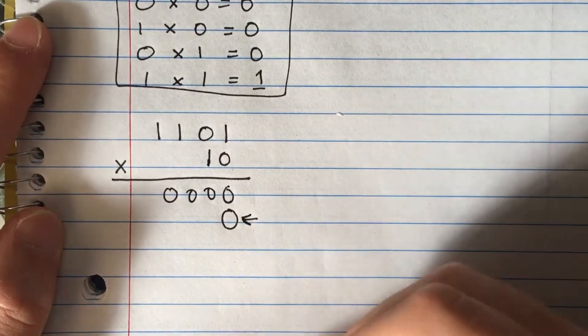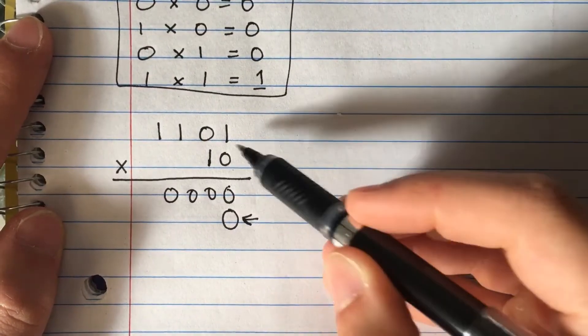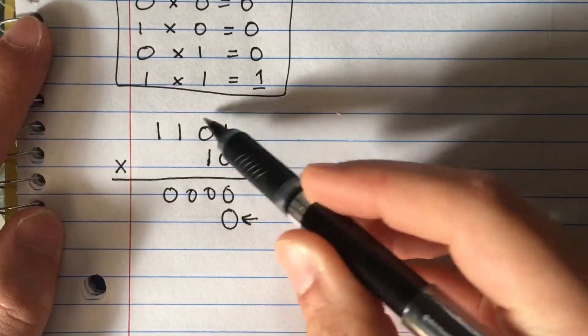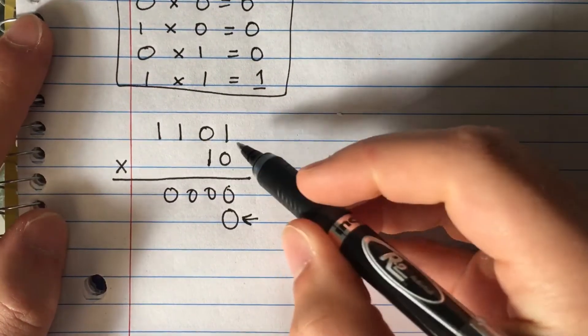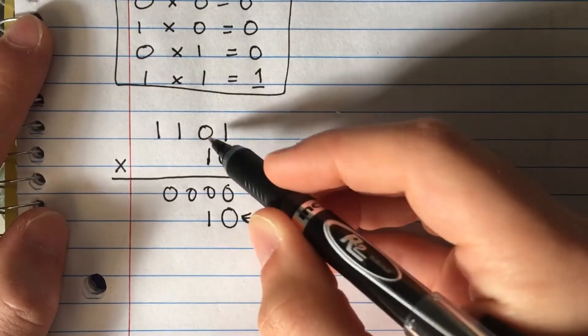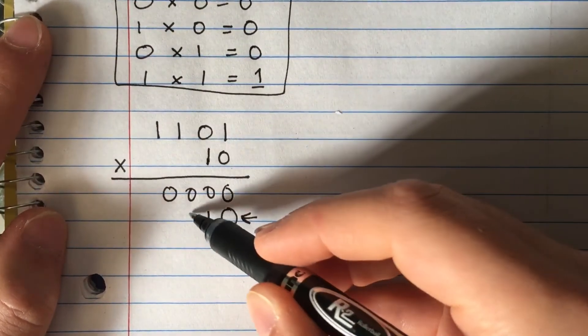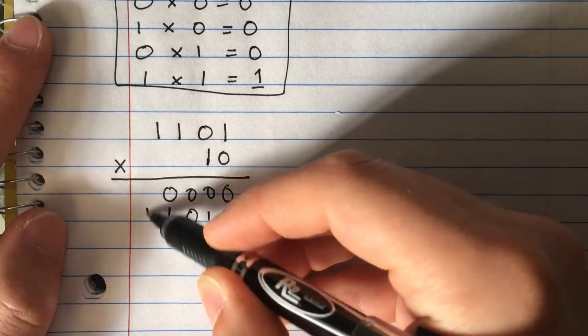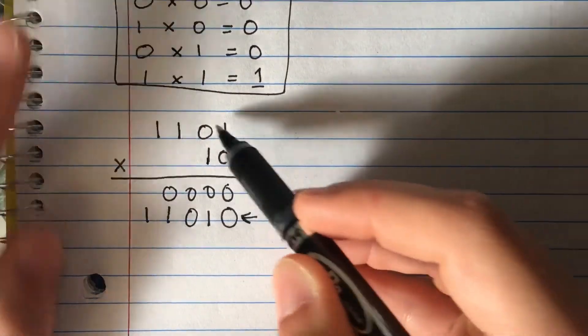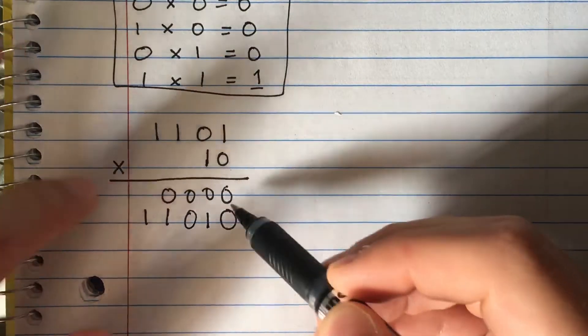Now we're going to multiply the second column in the bottom row. We have 1 times 1 equals 1, 0 times 1 equals 0, 1 times 1 equals 1, and 1 times 1 equals 1. Notice when you have a 1 on the bottom, you rewrite this number down. If you have a zero, you write straight zeros.